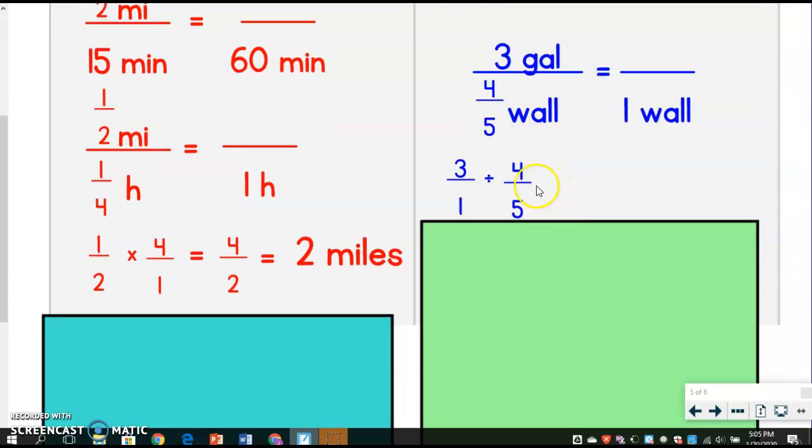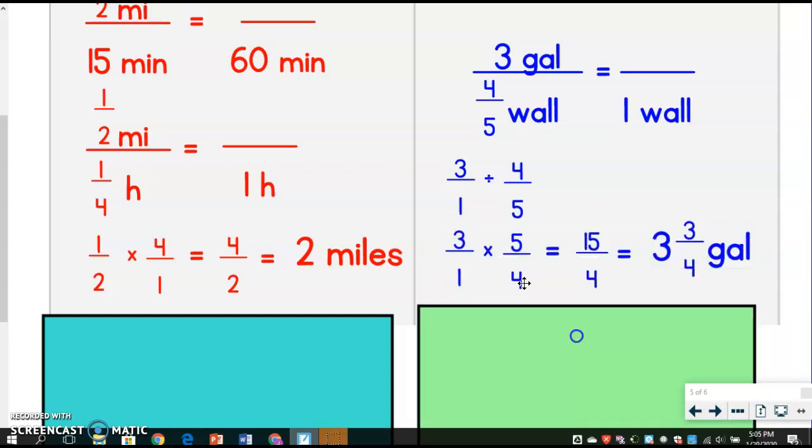So then it just becomes, excuse me, a fraction divided by another fraction, which we've done before, way back when. So we have to do keep, change, flip, and we get three over one times five over four.